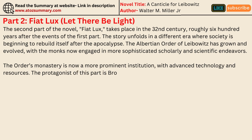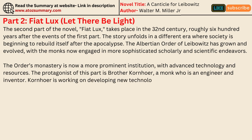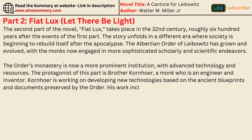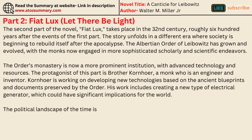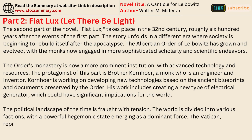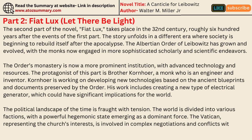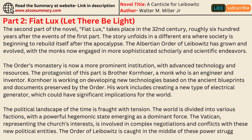The protagonist of this part is Brother Kornhauer, a monk who is an engineer and inventor. Kornhauer is working on developing new technologies based on the ancient blueprints and documents preserved by the Order, including creating a new type of electrical generator with significant implications for the world. The political landscape of the time is fraught with tension — the world is divided into various factions, with a powerful hegemonic state emerging as a dominant force. The Vatican, representing the Church's interests, is involved in complex negotiations and conflicts with these new political entities, and the Order of Leibowitz is caught in the middle of these power struggles.